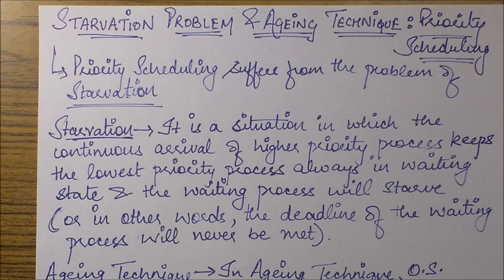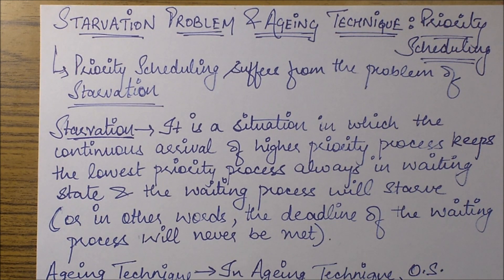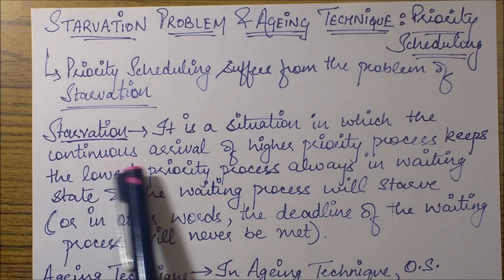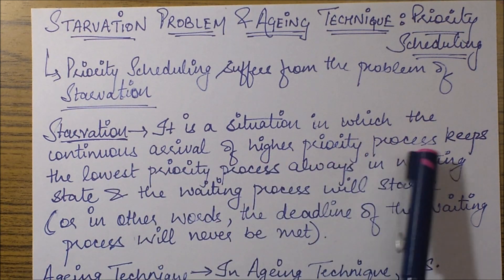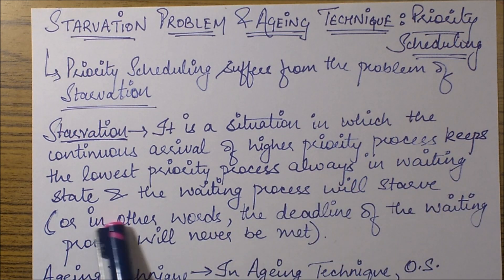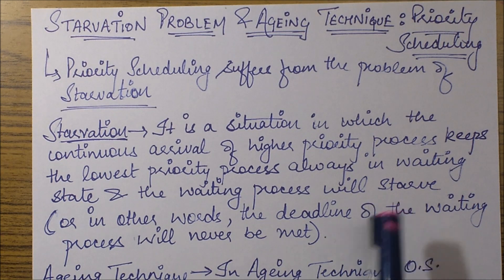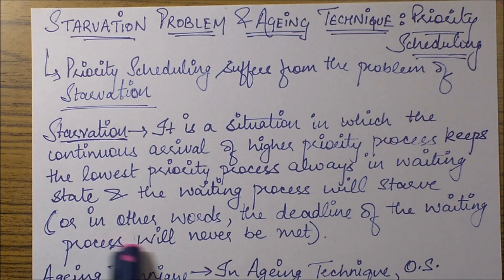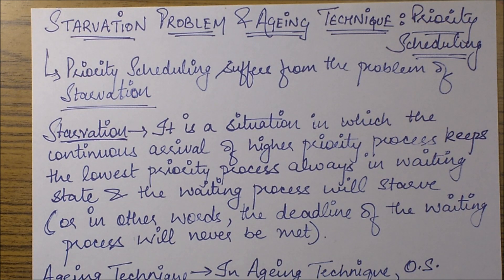The priority scheduling starvation problem is defined as a situation in which the continuous arrival of higher priority processes keeps the lower priority process always in the waiting state, and the waiting process will starve. What I mean by starve is that the deadline of the waiting process will never be met. Once the deadline is gone, there is no benefit of executing that process.